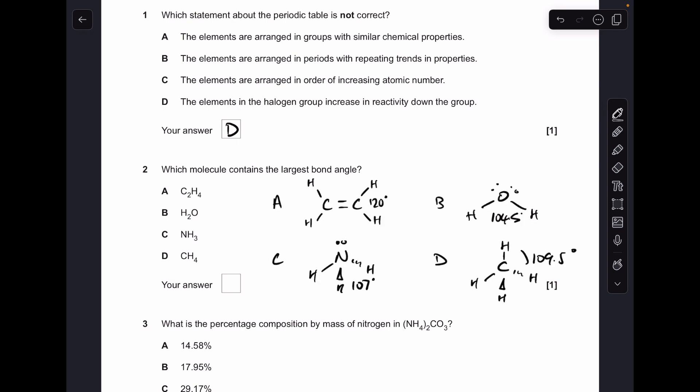Number two, easiest thing to do is draw them out to see the angles and you can see straight away in A we've got an angle of 120 degrees so that's the answer.